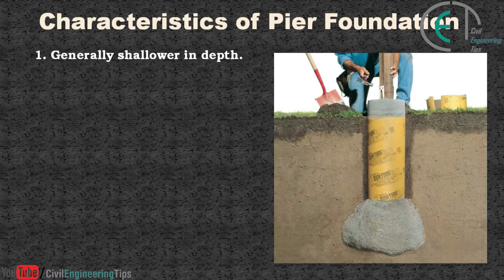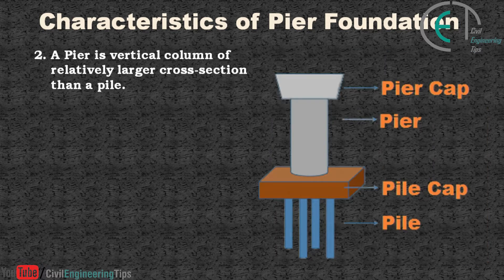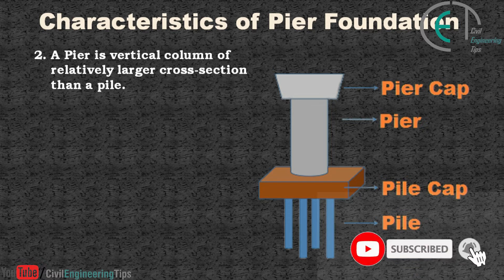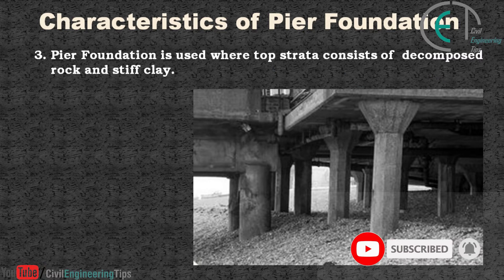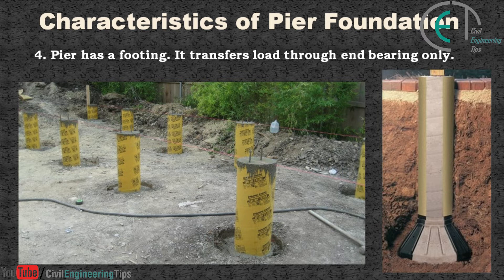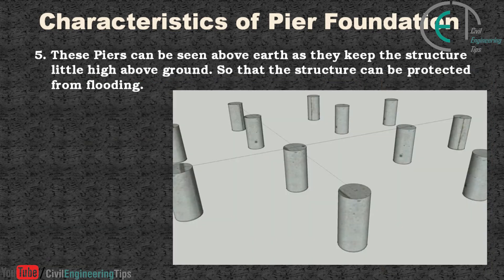Now let's have some ideas about the characteristics of pier foundation. Number one, pier foundation is generally shallower in depth. A pier is a vertical column of relatively larger cross-section than a pile. Pier foundation is used where the top strata consists of decomposed rock and stiff clay. A pier has a footing and it transfers load through end bearing only.